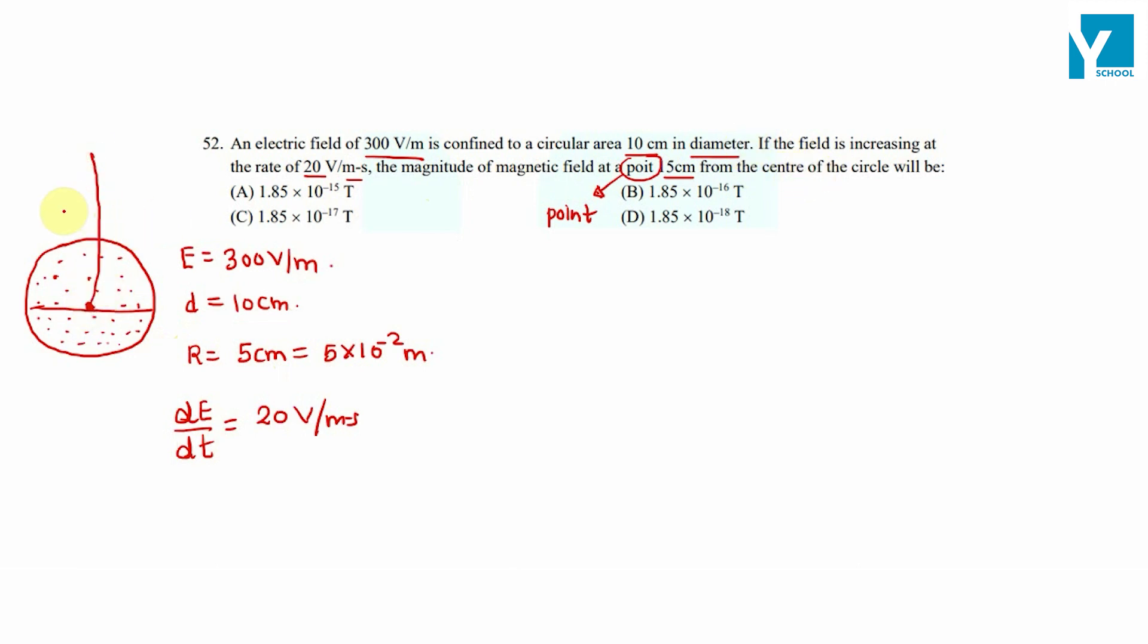Suppose we have a 15 centimeter point where we need to find the magnetic field. We know as per Maxwell's equation, integration over the closed loop B dot dL is equal to mu_0 epsilon_0 times d by dt of electric flux.